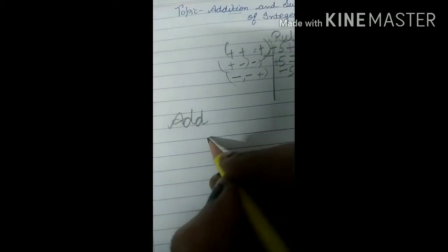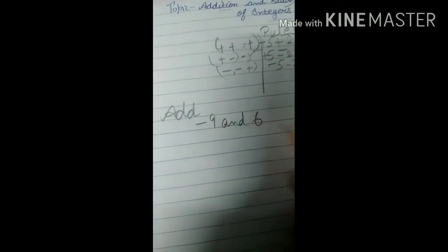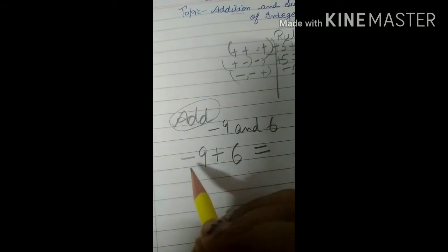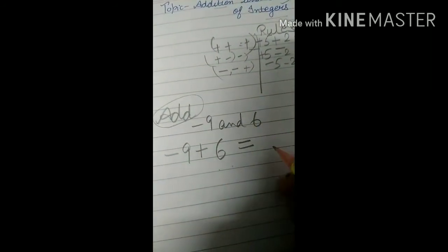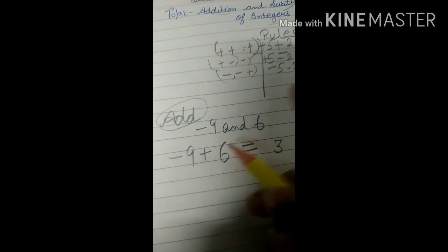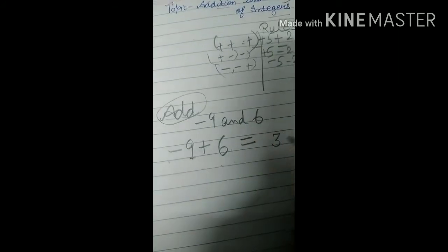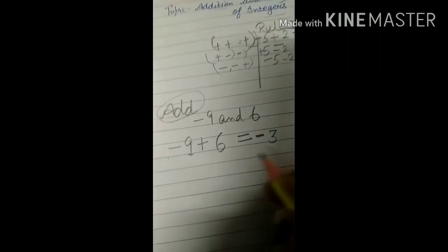Here we have some examples. Just imagine you have to add these two numbers: minus 9 and 6. So you have to add minus 9 plus 6. Plus minus gives minus, so the result is 9 minus 6, which is 3. The sign becomes that of the bigger number — the bigger number is 9, and in front of 9 there is minus, so we write minus 3.